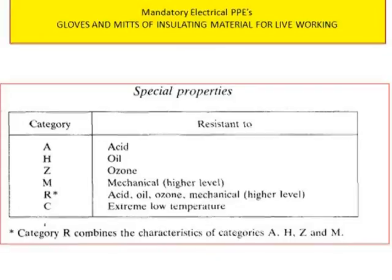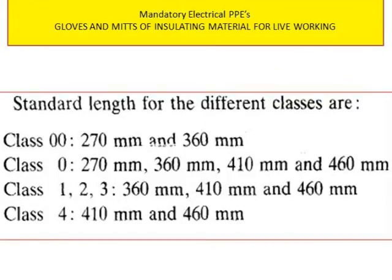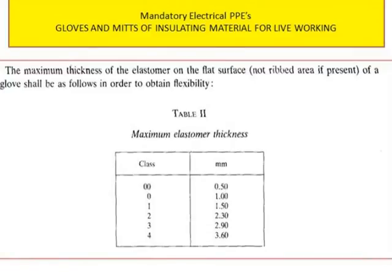There are different standard lengths for different classes. For class double zero: 270 mm and 360 mm. For class zero: 270 mm, 360 mm, 410 mm, and 460 mm. For class 1, 2, and 3: 360 mm, 410 mm, and 460 mm. For class 4: 410 mm and 460 mm.